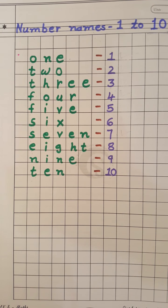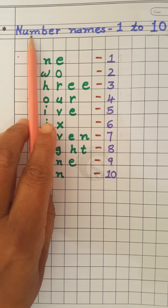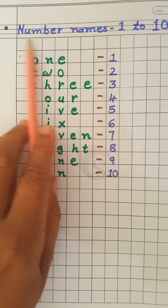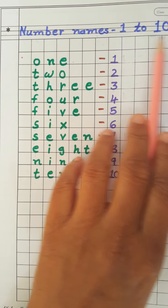And in Maths, what we are learning children? Yes, number names. N-U-M-B-E-R. Number N-A-M-E-S. Names. Number names 1 to 10.